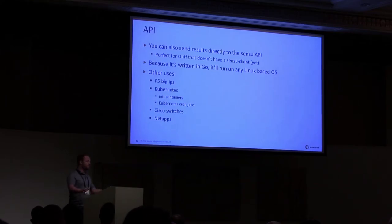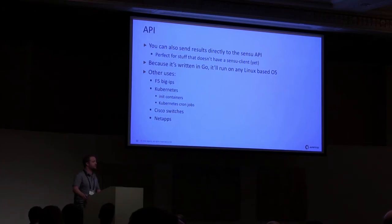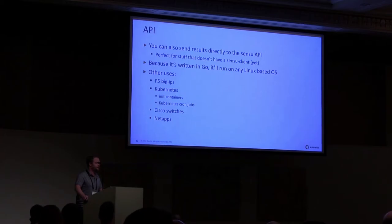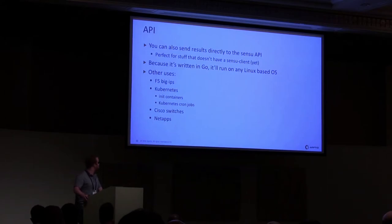Once the Sensu socket stuff was figured out, the API was introduced. You can now also send results to the API. We use this really heavily in certain parts of our infrastructure, simply because Sensu can't be installed on things like networking equipment, NetApps, and inside Docker containers — or you can, but you probably shouldn't. Because it's a Golang binary, you can just install it on all of these things and it will just work. We've done things like get an alert when an F5 sync doesn't work. We use it in Kubernetes init containers when we do a setup job during Kubernetes deployments, and we use the Kubernetes beta cron jobs resource for that. We're also looking at using it in Cisco switches and on our NetApp filers.